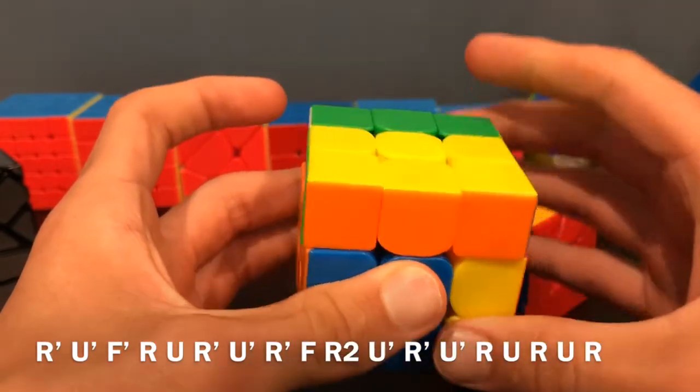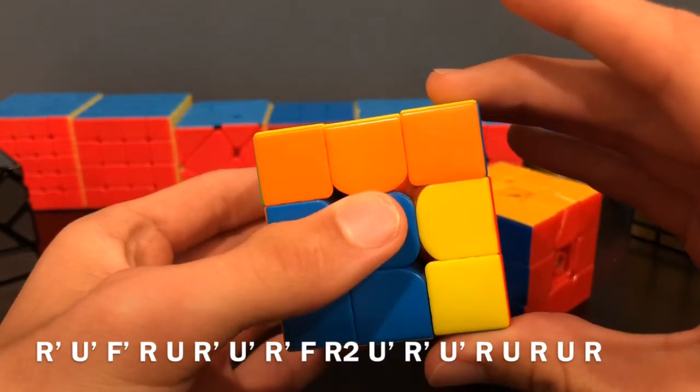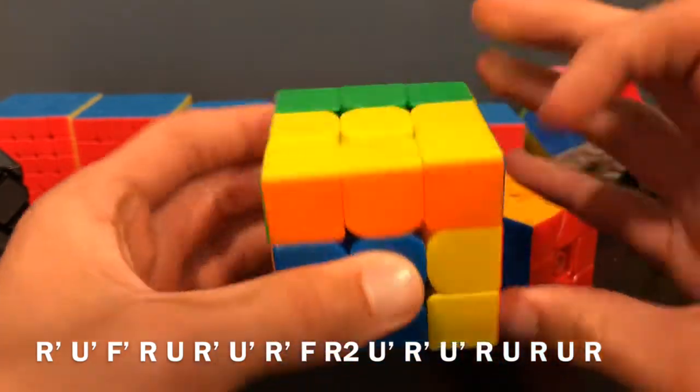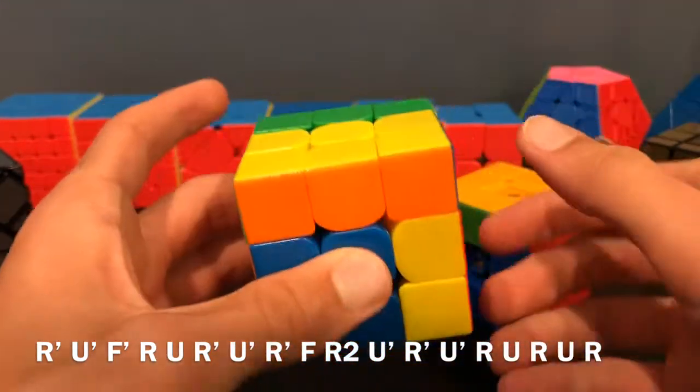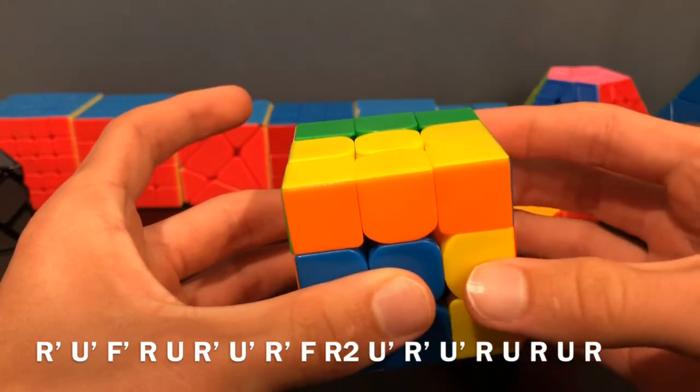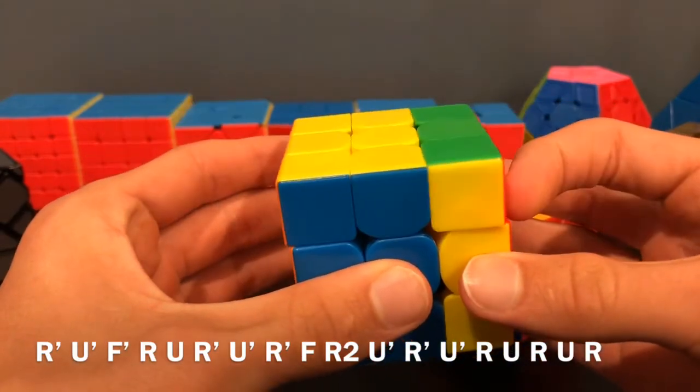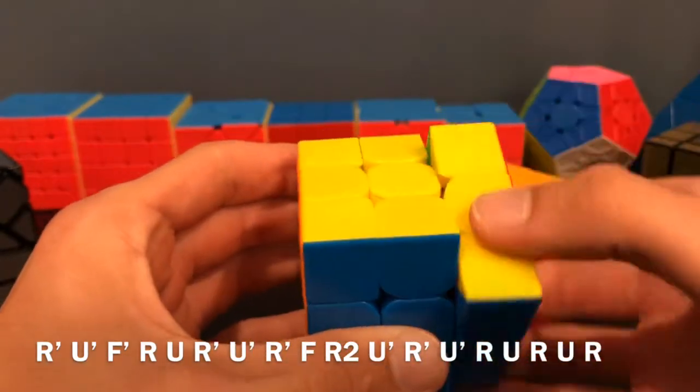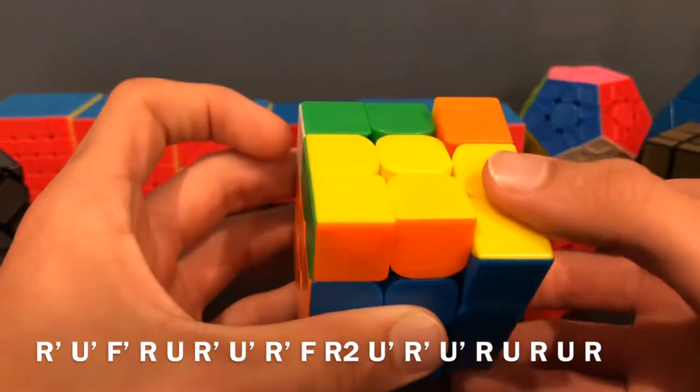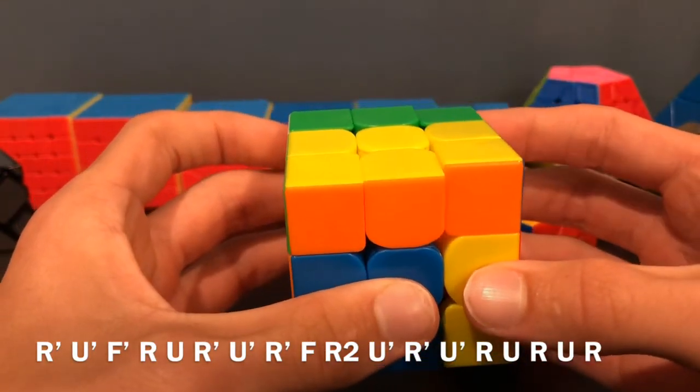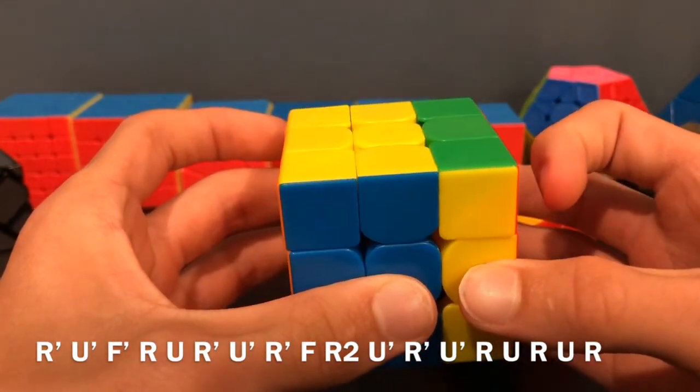Now watch this. So this is a little bit different. Normally you'd think that I do this, but watch. So there's an F2L pair right here. What I'm going to do is I'm going to do a U and then insert that F2L pair. So you see it was here, and then I just U' R.